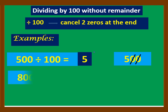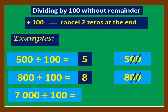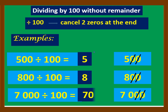800 divided by 100 — rewrite 800 and cancel two zeros, the answer is 8. And 7,000 divided by 100 — rewrite 7,000 and cancel two zeros, the answer is 70.